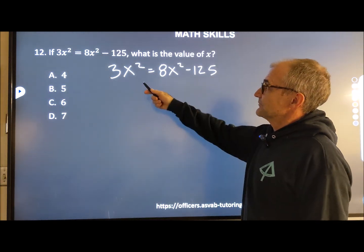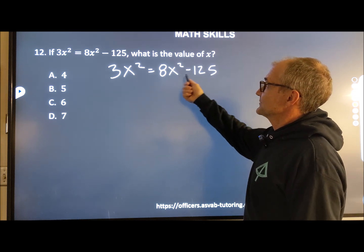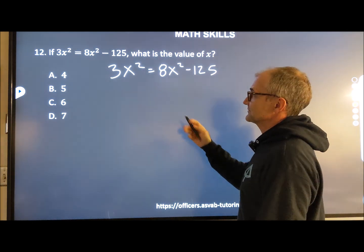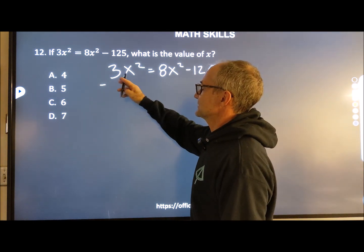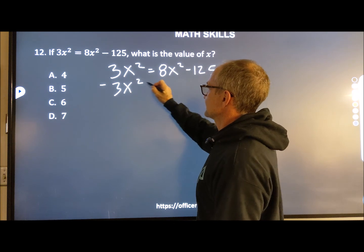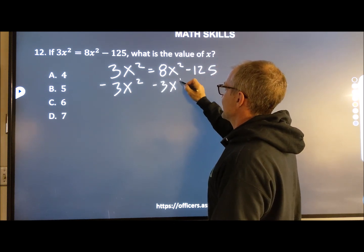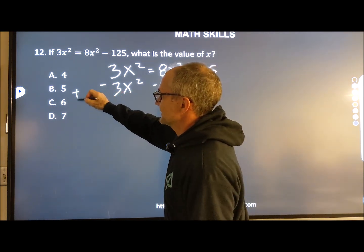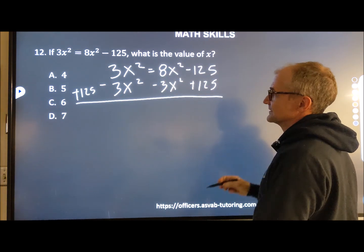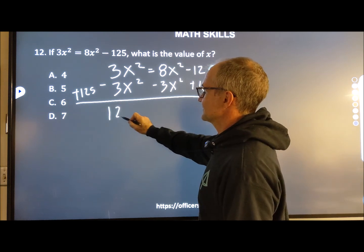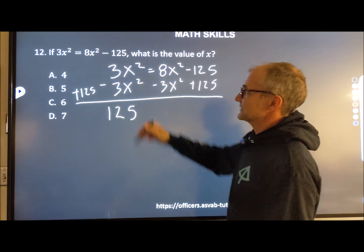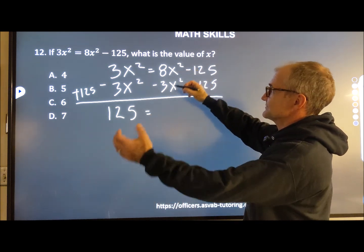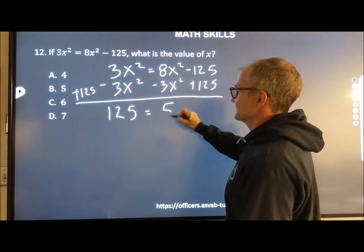Number 12, if 3x² equals 8x² minus 125, what's the value of x? It means I have to get all my x's by themselves. So I'm going to subtract 3x² from both sides. I'm also going to add 125 to both sides. So I can do whatever I want as long as I do it to both sides of the equation. So this is going to give me 125 over here. 3x² minus 3x², those are going to cancel. 8x², I have 8 of these things minus 3 of these things, will give me 5x².